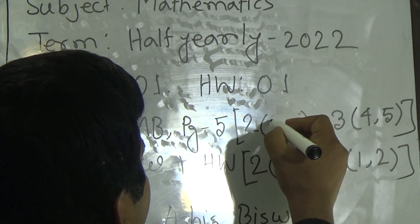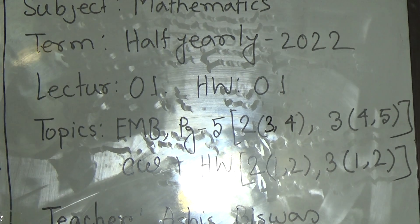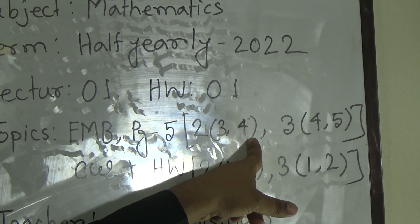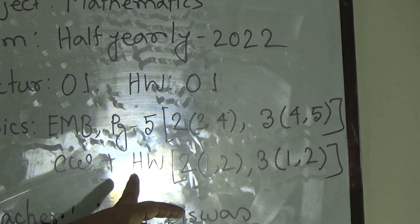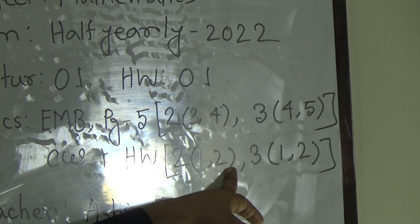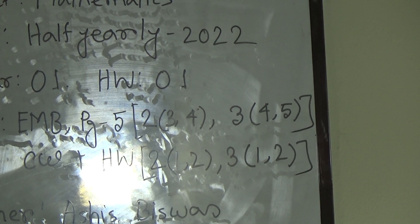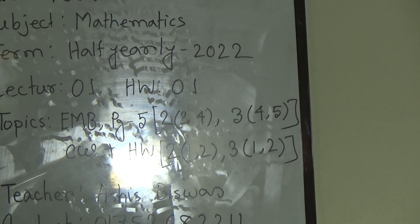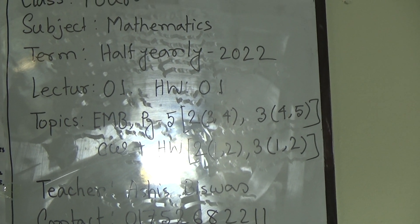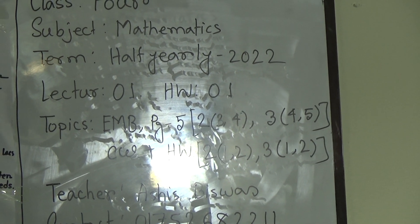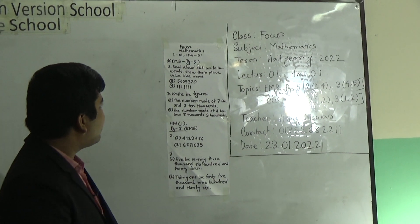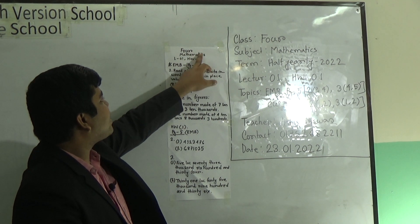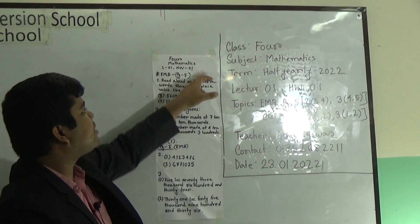My dear student, it is not 4 — it will be 3 and 4. From question 2, we shall solve 3 and 4, and from question 3, we shall solve 4 and 5 as your CW. And from question 2, numbers 1 and 2, and from question 3, numbers 1 and 2 will be your HW. You must do your HW in your HW copy and submit it regularly in our school campus every Saturday within 9 a.m. to 3 p.m. Here you notice: 4 mathematics, lecture number 1 and HW number 1.